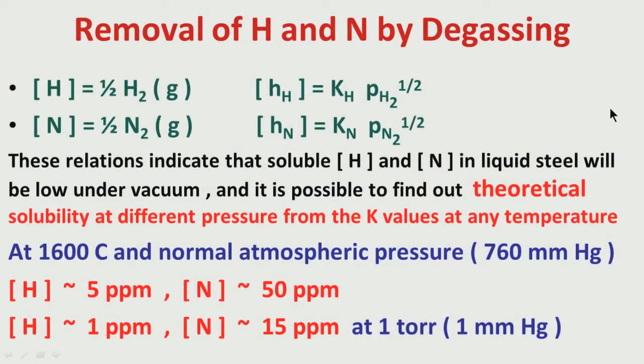Coming to another important requirement of secondary refining. I have talked about deoxidation - the oxygen level in liquid steel has to be brought down. Then I talked about sulphur in liquid steel being brought down, because if there is residual sulphur, you have more manganese sulphide or calcium sulphide in steel, creating sulphur inclusions. So the inclusion content increases and cleanliness is affected. First deoxidation, then desulphurization.